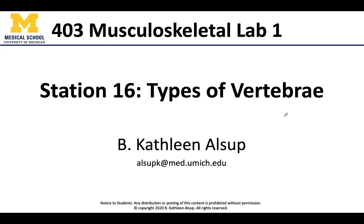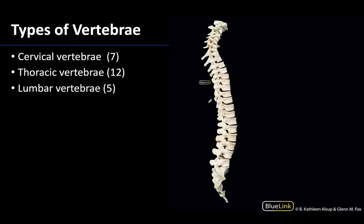Hello anatomy colleagues and welcome to station number 16. This is one of my all-time favorites because I love to talk about the differences between the movable vertebrae and how we're going to be able to identify them. When we're talking about movable vertebrae there are three types: the cervical in this region, the thoracic, and the lumbar down here in the lower back region. We'll have separate videos on the immovable vertebrae, the sacrum and the coccyx, in later stations.